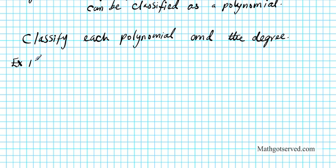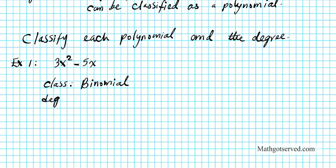Example one: what if we had the polynomial 3x squared minus 5x? What is the classification here? You have two terms, so it's a binomial. And the degree — the exponent of the variable with the highest power is x squared. So this term has the biggest degree. The degree is 2.